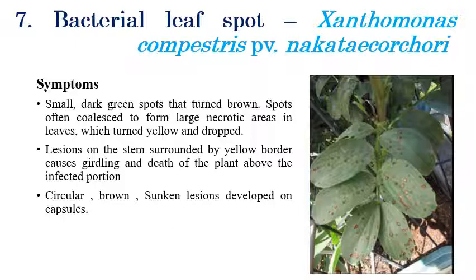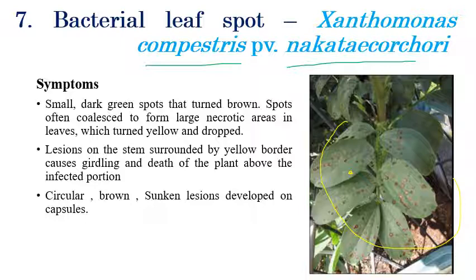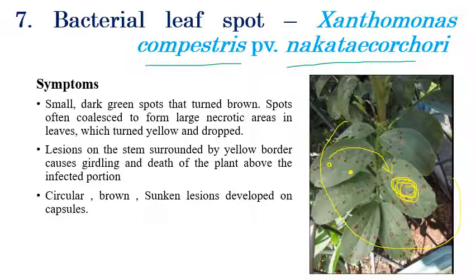Bacterial leaf spot is caused by Xanthomonas campestris pathovar necata corcori. Initially, small green color spots appear on leaves, which later convert to brown. In later stages, spots coalesce to form large necrotic areas that turn yellow, and drooping of leaves is observed. The spots are circular and brown, eventually becoming sunken lesions on capsules. If magnified, the stem is seen to be surrounded by a yellow border, which can sometimes lead to death of the plant above the infection point.